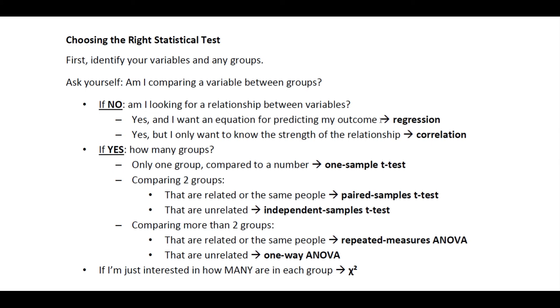So, if you are interested in identifying a relationship between variables and you want an equation allowing you to make those predictions of an outcome, that's the case where you'll be running a regression analysis. If you want to look at the relationship between variables, but you only want to know the strength and relationship of the variables of the relationship, then you're going to be looking at a correlation.